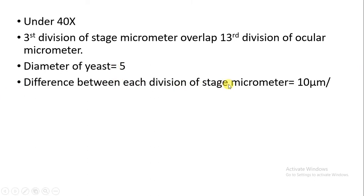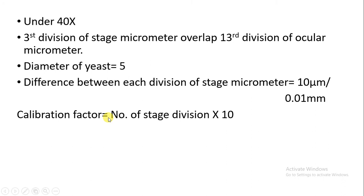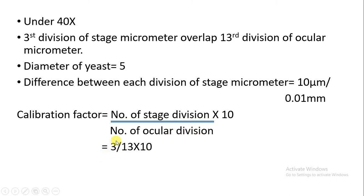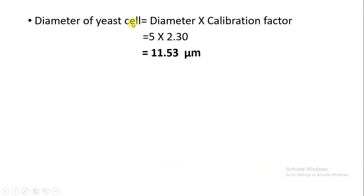Now we need to find the calibration factor. The difference between each division of the stage micrometer is 10 micrometers or 0.01 mm. The calibration factor formula is: number of stage divisions upon number of ocular divisions, into 10. So as we know, 3 is the number of stage divisions and 13 is the number of ocular divisions, multiplied by 10 — this gives us a value of 2.30 micrometers. Now the diameter of the microscopic cell: 5 ocular divisions were observed, so diameter equals 5 into the calibration factor 2.30, giving us 11.53 micrometers. This is the value of the microscopic organism we observed.